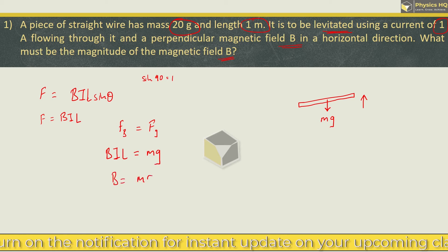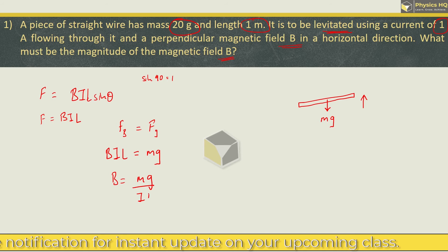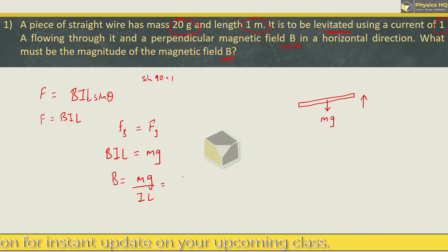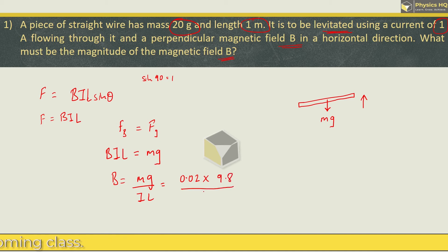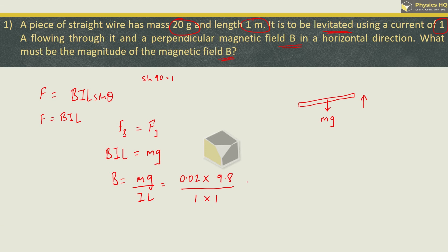We are supposed to find B, so B = Mg / (IL). Mass is 20 grams = 0.02 kg, g = 9.8 m/s², current = 1 ampere, and length = 1 meter. So 9.8 × 0.02 = 0.196 tesla. Hope you all understood this.